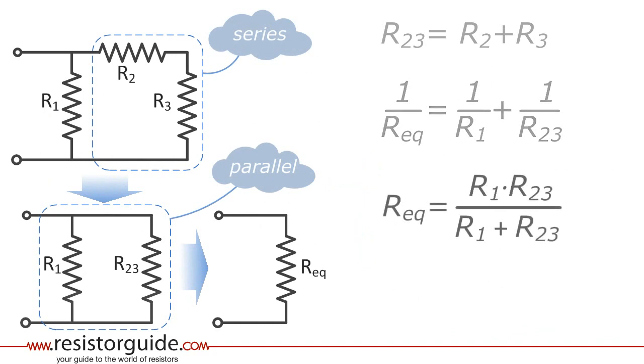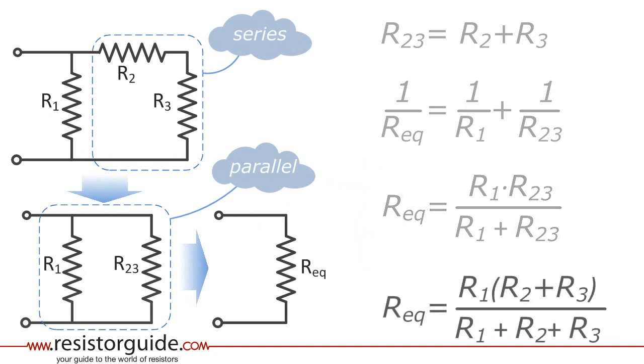Using simple algebra we can rewrite it in this way. By replacing R23 by R2 and R3 we get the equivalent resistance expressed in R1, R2 and R3. With this principle also more complex networks can be solved.